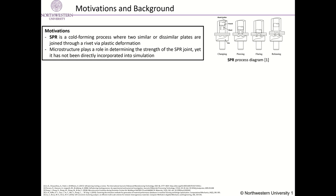In this project, we investigate the self-piercing riveting joining technology. SPR is particularly attractive when other joining methods are not viable, like is the case for certain aluminum welding. SPR forms a mechanical joint between two thin plates in a four-stage process: clamping, piercing, flaring, and releasing.